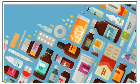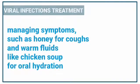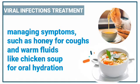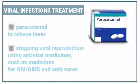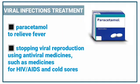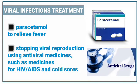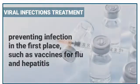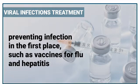Viral infection treatment can include managing symptoms — such as honey for coughs and warm fluids like chicken soup for oral hydration — and paracetamol to relieve fever. It can also involve stopping viral reproduction using antiviral medicines, such as medicines for HIV/AIDS and cold sores, or preventing infection in the first place through vaccines for flu and hepatitis.